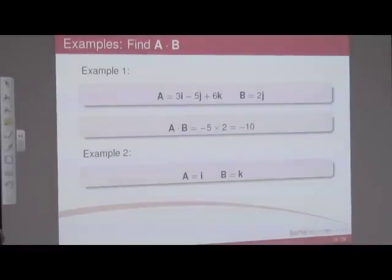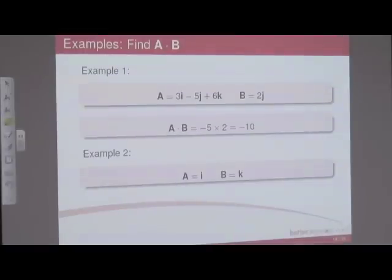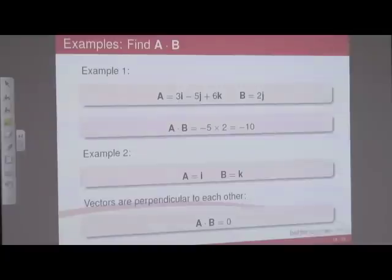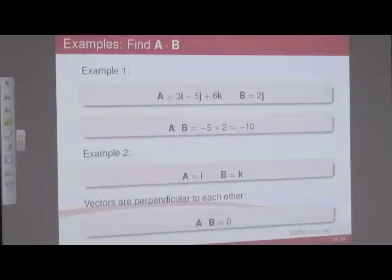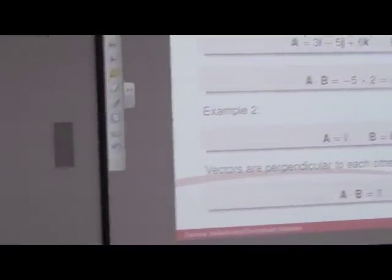Here's another example: i and k. The magnitudes are 1 and we've just got the unit vectors — what's the dot product of those two? Zero, exactly — they're perpendicular to each other, so we know that the dot product equals zero. Dot products are quite simple; there are some exercises at the end of this chapter that you can work on.